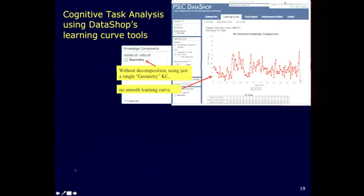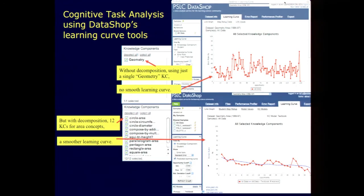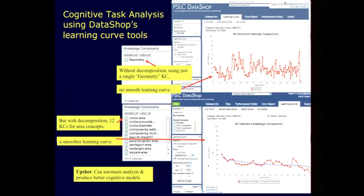So DataShop allows you to display these learning curves. And here we have one knowledge component, geometry. And we get this rough curve. Without decomposition, no smooth learning curve. But what if we take this exact same data and divide it up into 12 different, you can call them concepts or skills, whatever you want. We're going to relabel those steps to say some are about circle area, some are about trapezoid area. What happens to the curve? It starts to look like a learning curve. Yay! The error rate is going down with opportunities to practice circle area. But the particularly powerful thing about this is that those 12 components might not be right. They're certainly better than the one. But are they the right 12? And we can use this criteria of smooth learning curve and we can define it statistically and then iterate over possible models to find the best one.